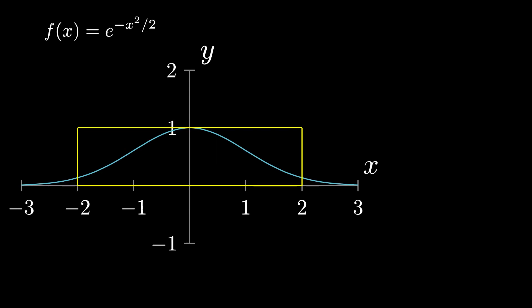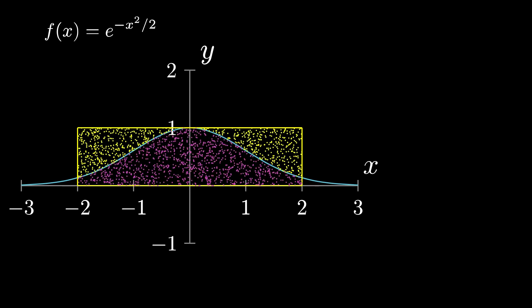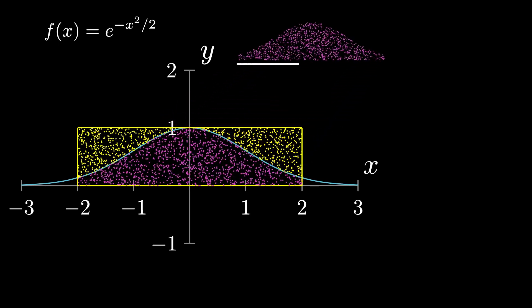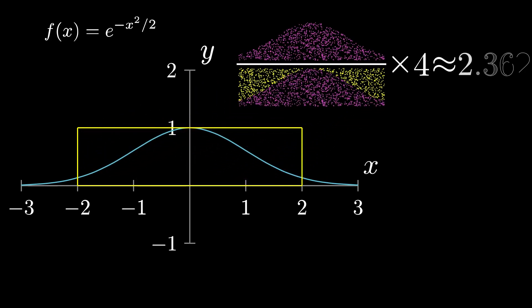So let's do it with 2,000 dots just to see how this would look. Fill it up. Divide by the dots under the curve. Divided by the total number of dots. And we get about 2.362.